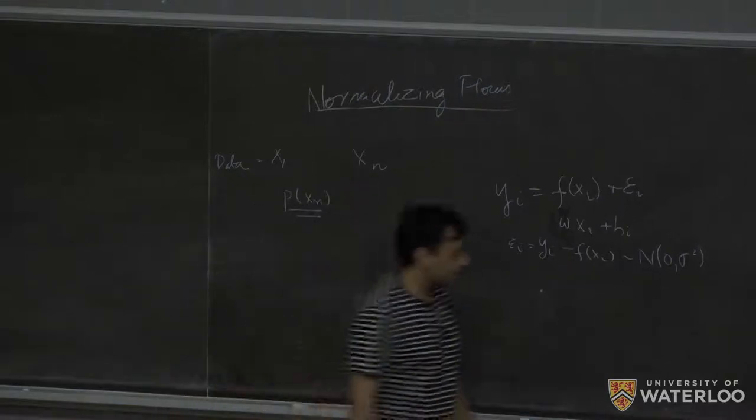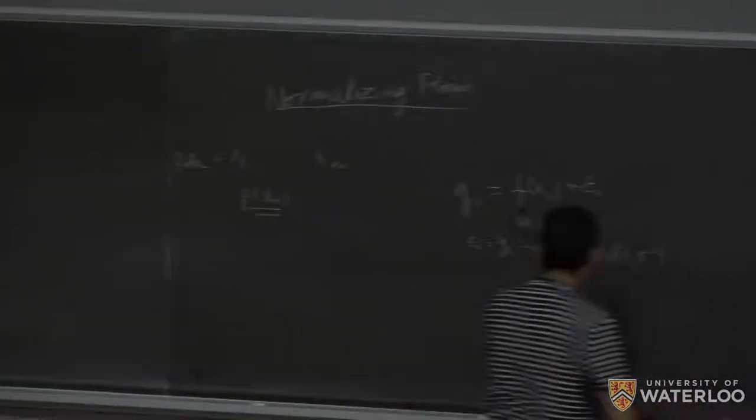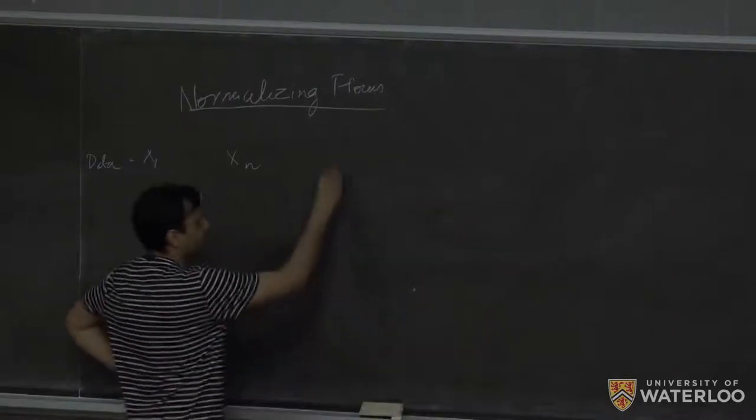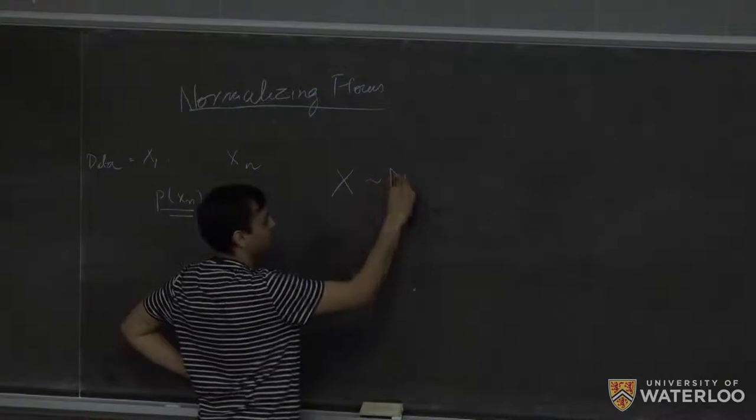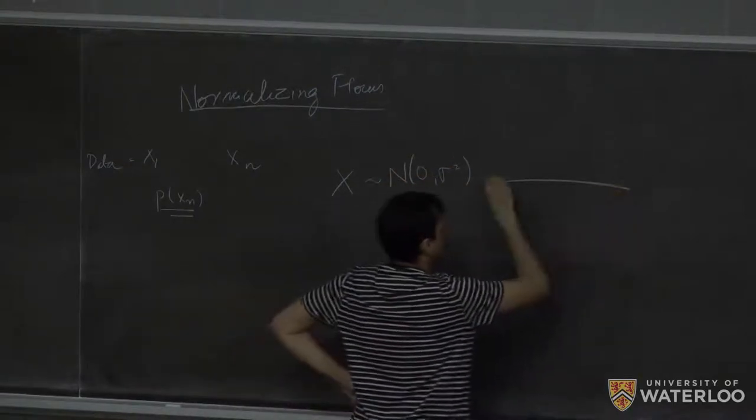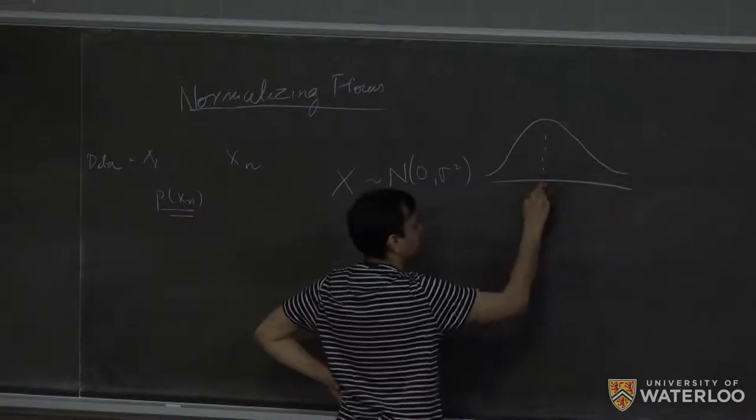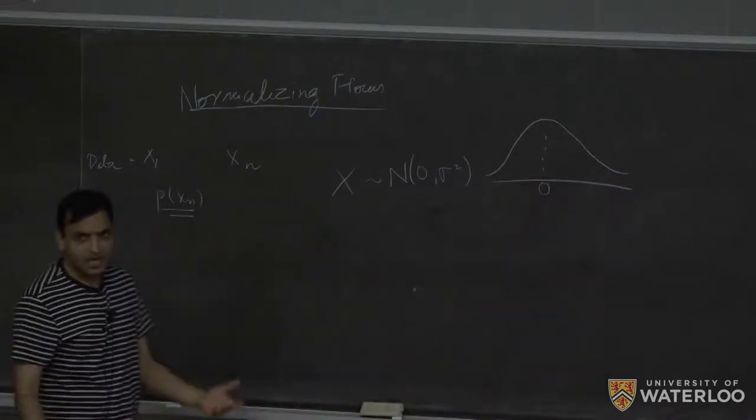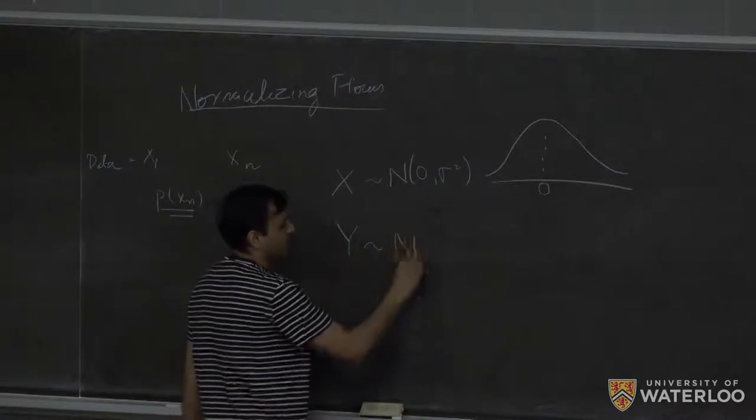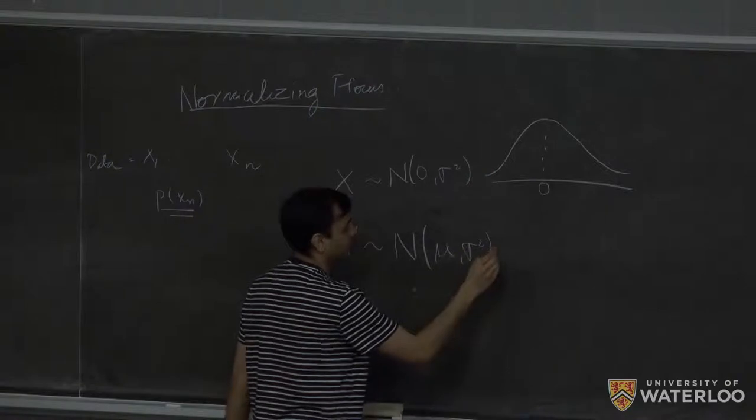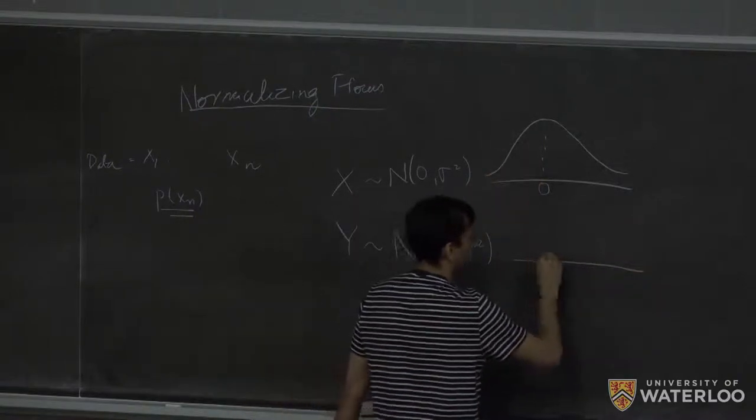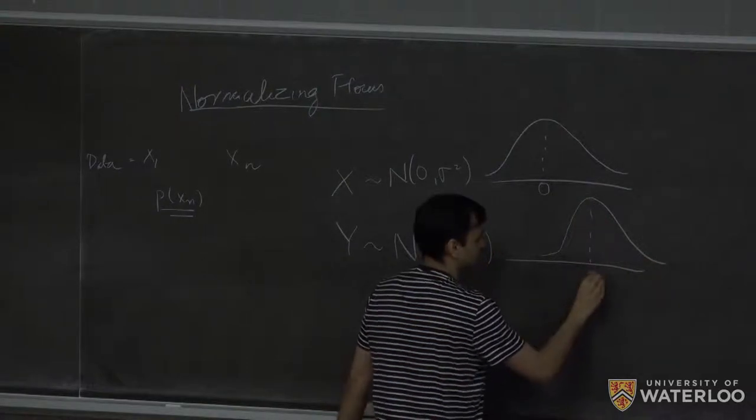So what normalizing flows essentially do is the following. So I'll draw a picture. So let's say I have a random variable x, which is normal zero sigma square. So how I draw this is that it is some sort of this thing, where this is zero. And I want to, there is another random variable, which is normal mu sigma square.